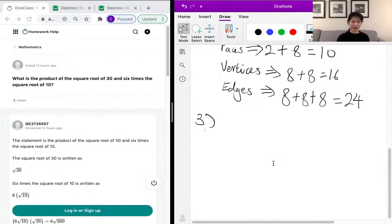Our next popular question that was asked: What is the product of the square root of 30 and six times the square root of 10? So first, this is kind of like a word problem-ish that we have to translate it into a formula.